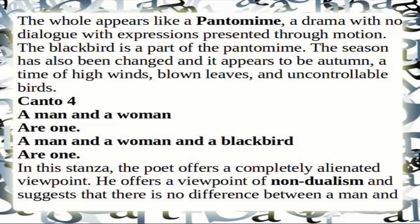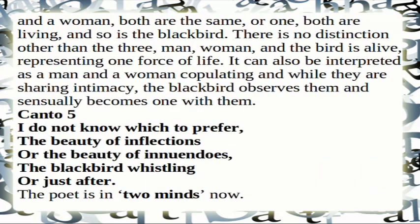Canto 4: 'A man and a woman are one. A man and a woman and a blackbird are one.' The poet offers a viewpoint of non-dualism, suggesting there is no difference between a man and a woman — both are the same, or one. Both are living, and so is the blackbird. There is no distinction — the man, woman, and the bird are alive, representing one force of life. It can also be interpreted as a man and a woman sharing intimacy while the blackbird observes them, sensually becoming one with them.